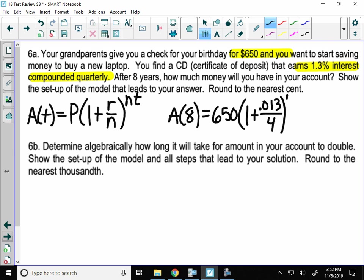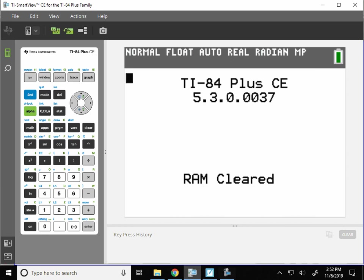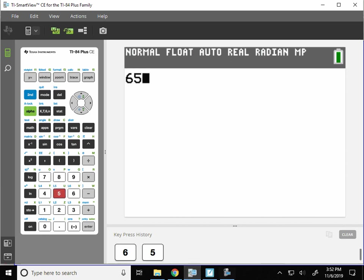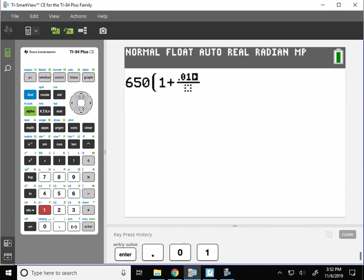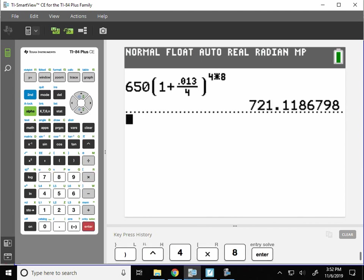This is going to go to the 4 times T power. And we're going to simply type that into our calculator, which is right here. You can make a fraction if you want, or you can just type in the numbers. It should all work out either way. And I'm going to go to 2 decimal places because this is money. In 8 years, you'll have $721.12.